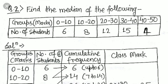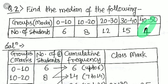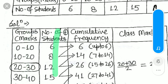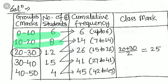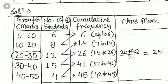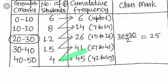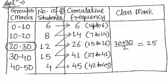Next example: find the median from a grouped frequency table. The class intervals are 0–10, 10–20, 20–30, 30–40, 40–50, with frequencies 6, 8, 12, 15, and 4 respectively. The cumulative frequencies are: 6, 14, 26, 41, 45.